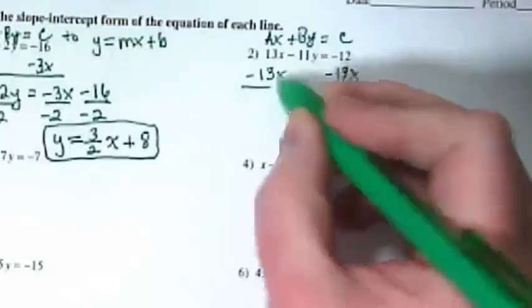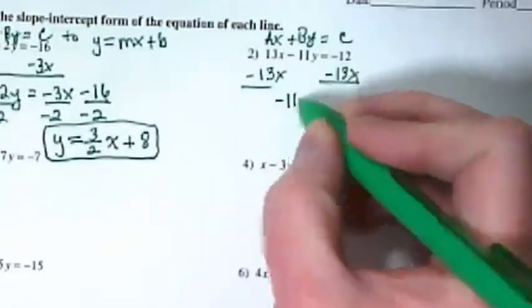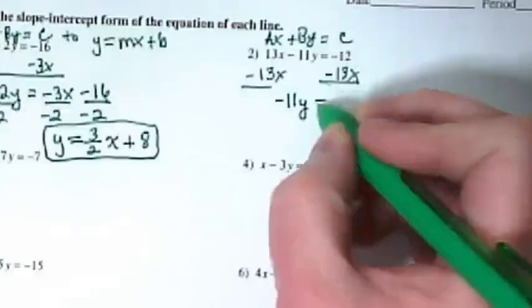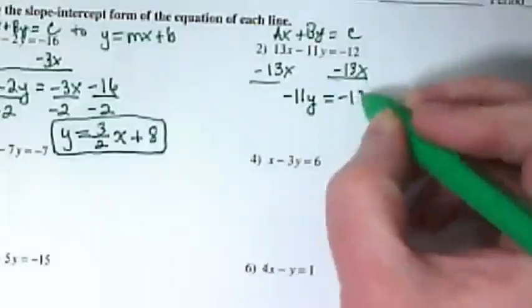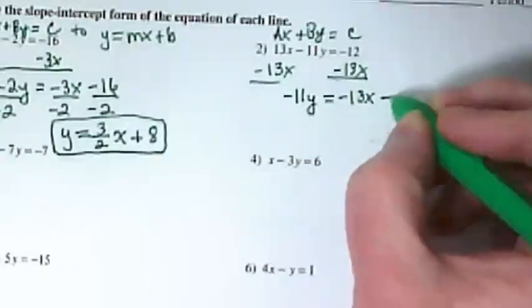I'm subtracting the 13x from both sides. I get negative 11y is equal to negative 13x minus 12.